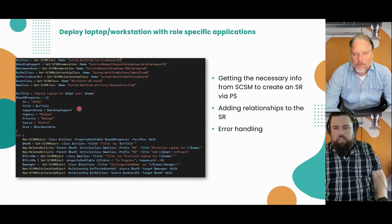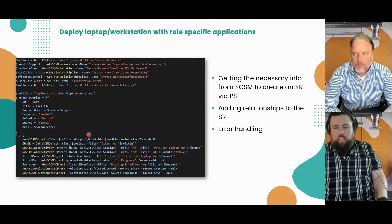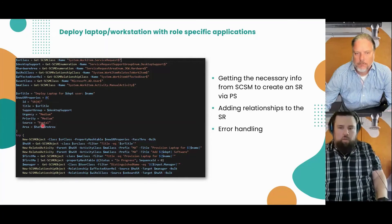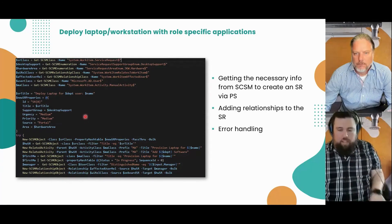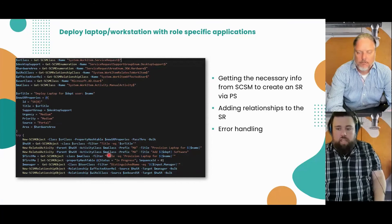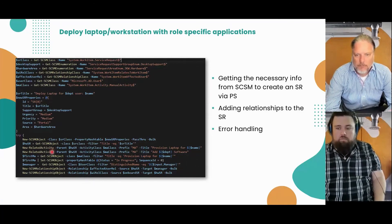Defining this SR is really similar to what you would do in the portal or the console. You can see you set the title, support group, urgency, priority. That's really all there is to it. Then pass it to the new-SCSMObject command, add the relationships, and that's pretty much it.